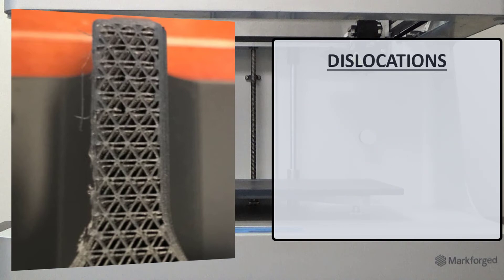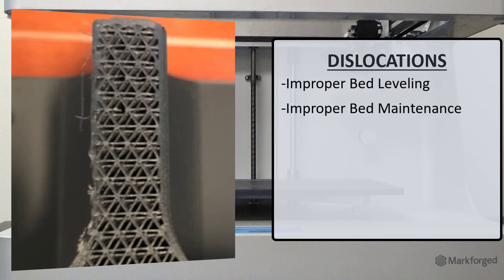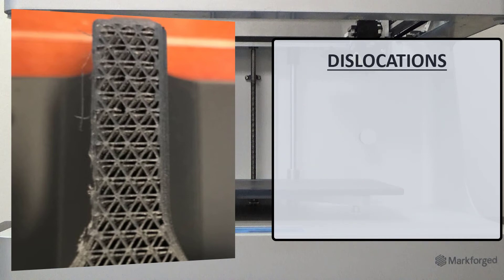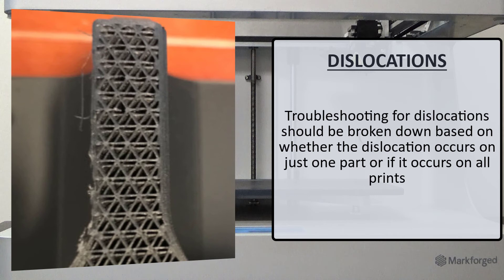Some common causes for this issue could be improper bed leveling, improper bed maintenance, part orientation, part design, improper belt tension, and in some very rare cases, the garolite on the print bed peeling up. Troubleshooting for dislocations should be broken down based on whether the dislocation occurs on just one part or if it occurs on all parts.